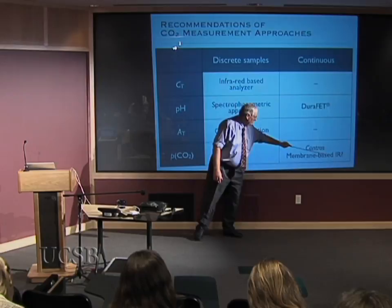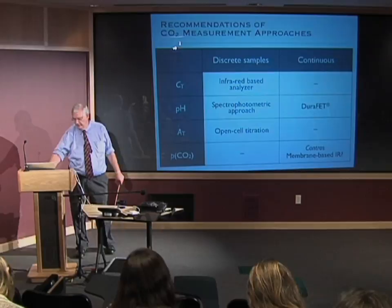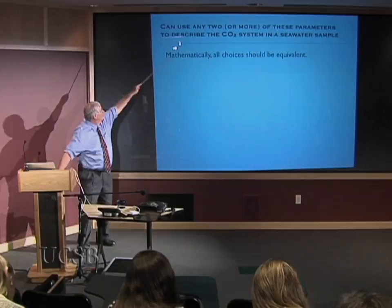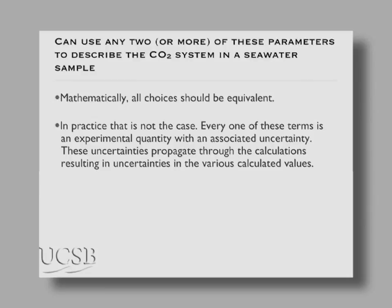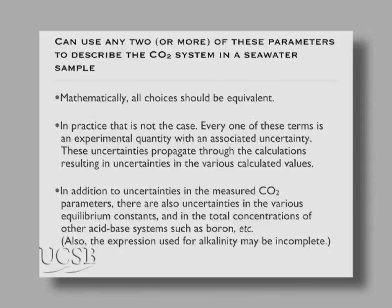There is one membrane-based infrared system from a company called Contros that would probably work sensibly on an ocean acidification system. We can use any two of the four parameters — two degrees of freedom to describe the seawater. Mathematically, all choices should be equivalent, but that's not true: they're all experimental quantities with uncertainties that propagate through the equations in different ways. Everything else — the boron-to-chlorinity salinity ratio, the pK1, the pK2 — also has uncertainties. So if carbonate ion concentration is what matters, you don't know it that well because all these things also contribute.